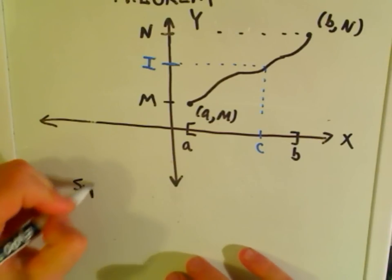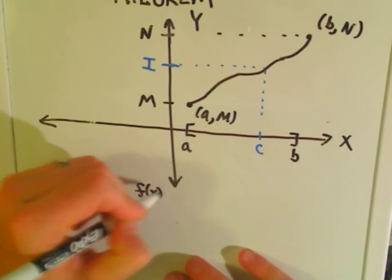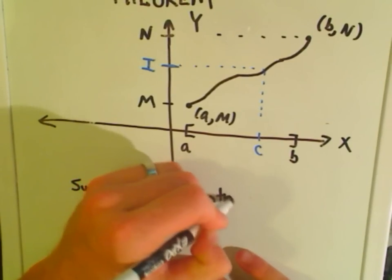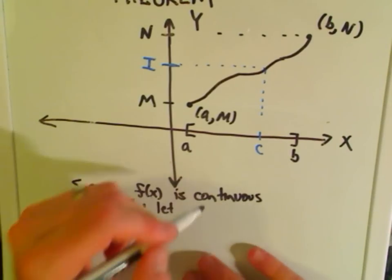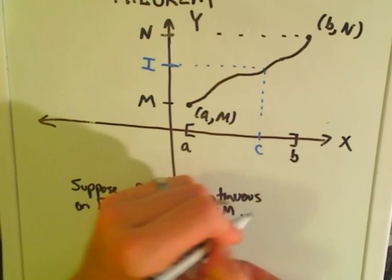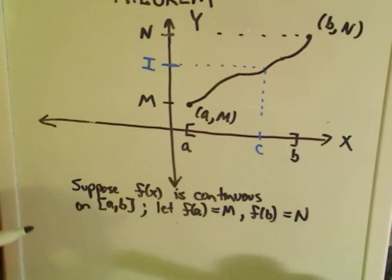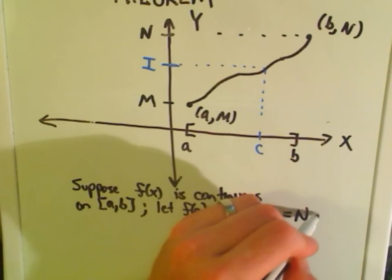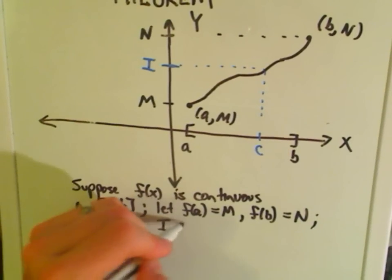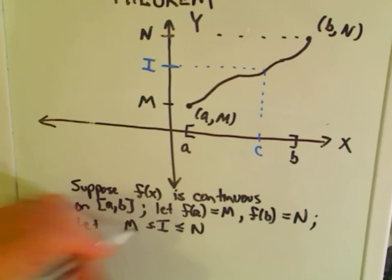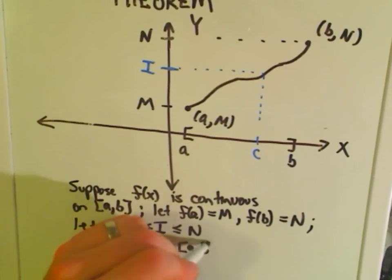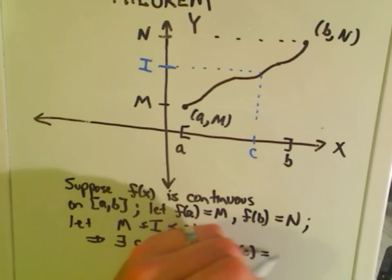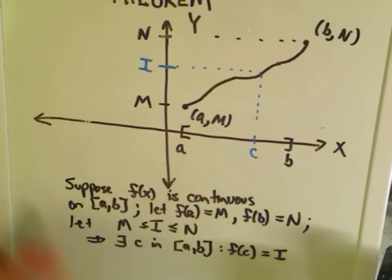Okay, so kind of a wordy statement of the intermediate value theorem. It says, suppose f(x) is continuous on [a, b]. It says, let f(a) equal m, f(b) equal n. Okay, so obviously in this case, m is smaller than n. And then it says, let i be smaller than n and greater than or equal to m. It says, then, there exists a point c in this interval a to b, so that when you plug c in, you get this number i out. Okay, so that's just kind of a wordy way to write this result up here.